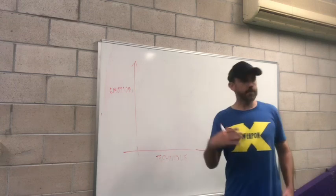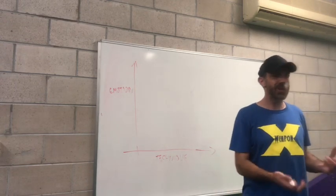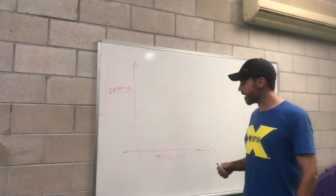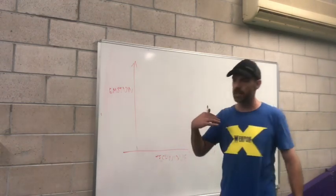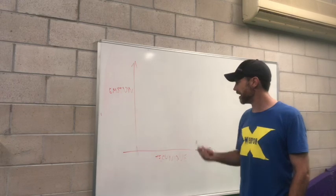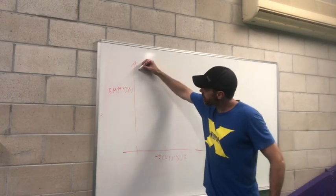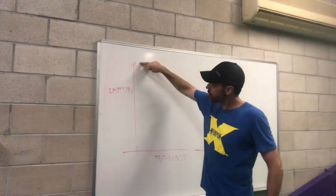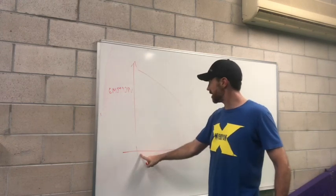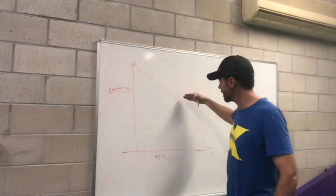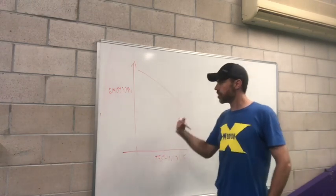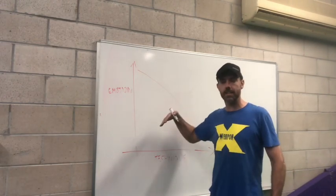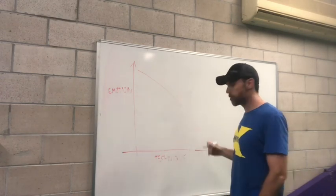Down here I have technique, and what I'm basically referring to is complex techniques or techniques which require thought or multiple steps. If we look at this and I graph this, these are my findings. The more emotion that's involved, the further away you move along that axis, the higher the value. So the more emotion that's involved, the less technique you're able to apply. As you move along this continuum or this line, it shows the inverse relationship between emotion and technique.